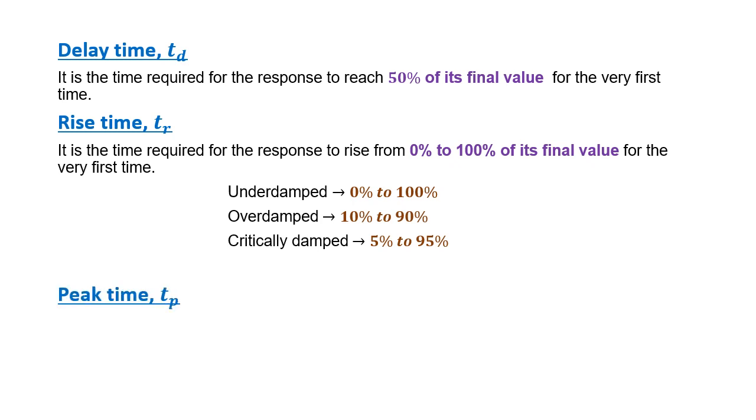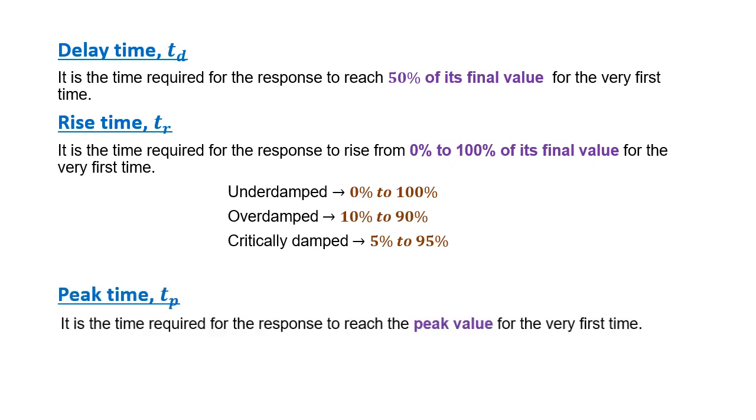The third parameter is peak time — symbol Tp. It is the time required for the response to reach the peak value for the very first time.